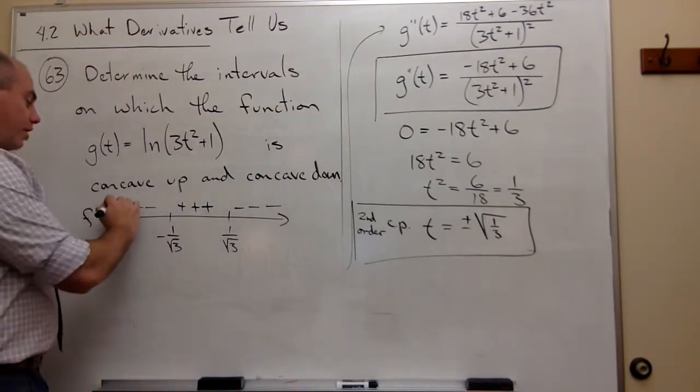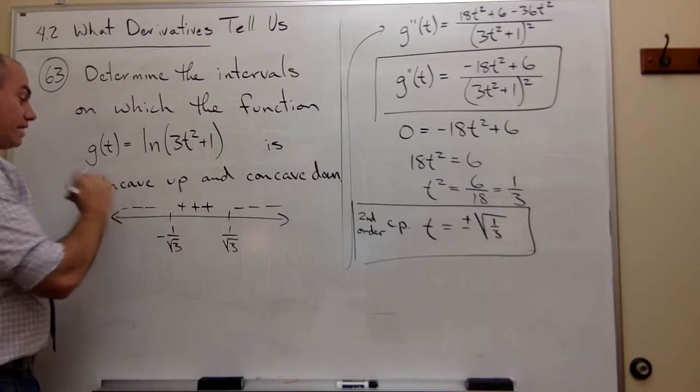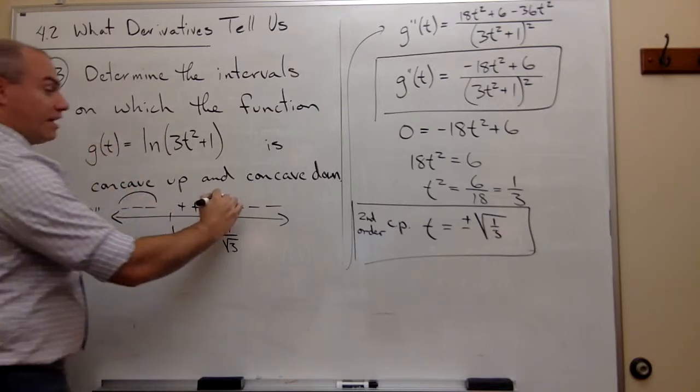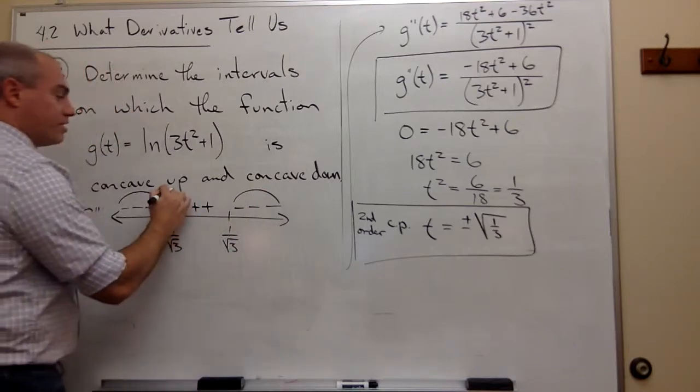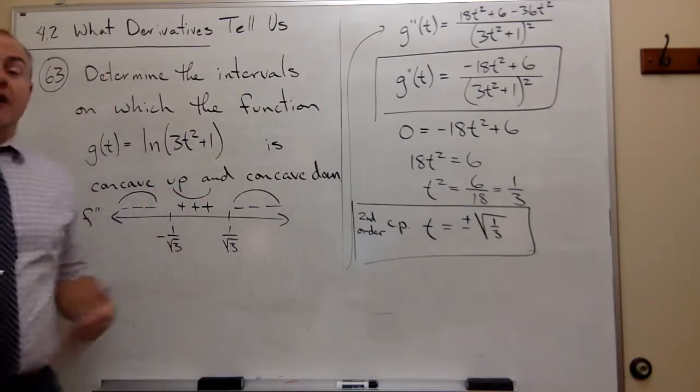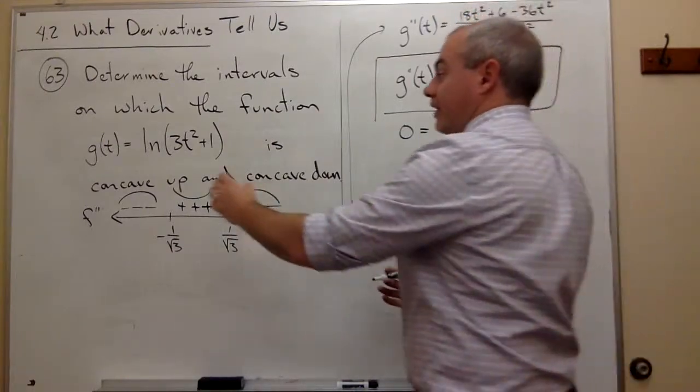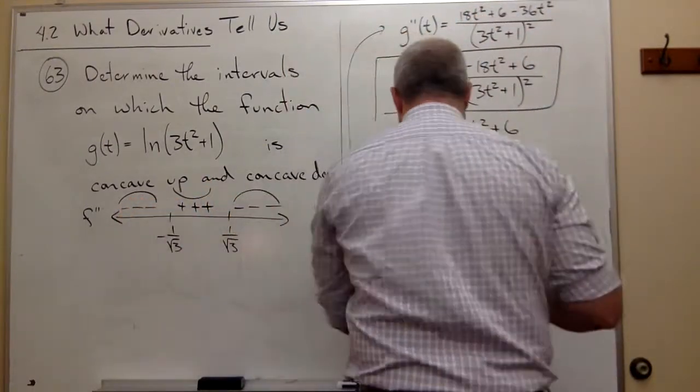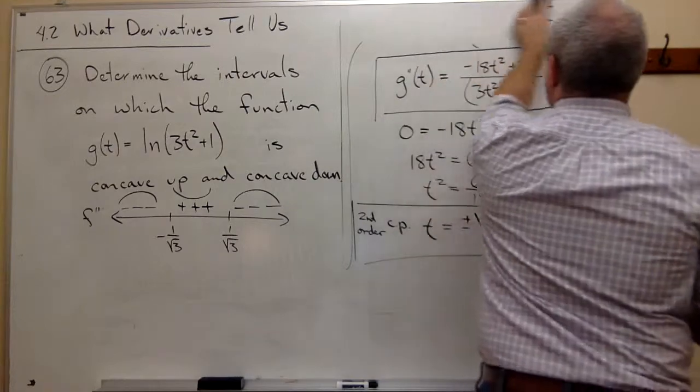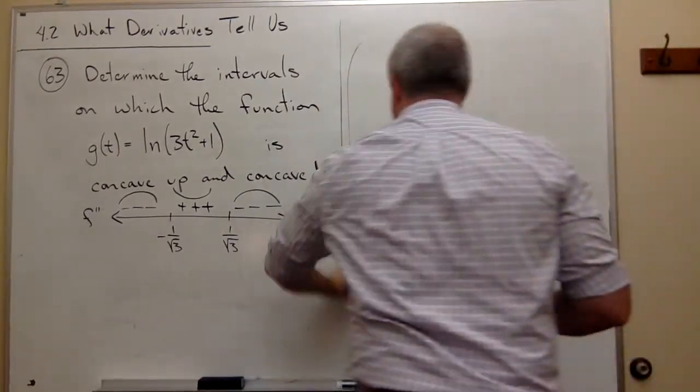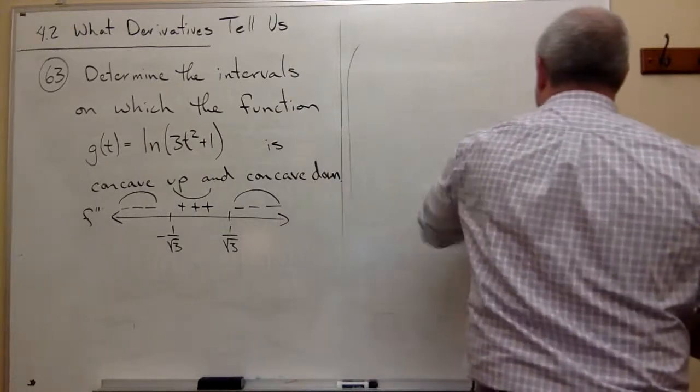Remember, negatives mean concave down or up? Well, it means concave down. Negatives mean concave down. Positives mean concave up. And now I'm just ready to write down my answer. I have figured out where my function is concave up and down using the critical points of the second derivative.